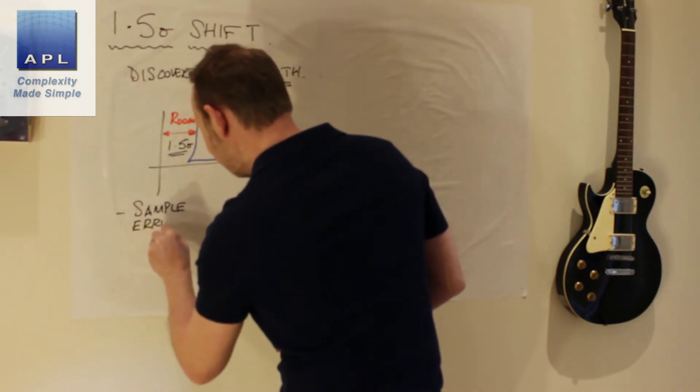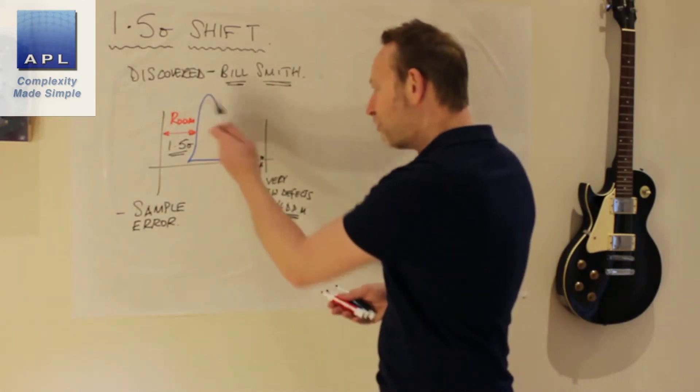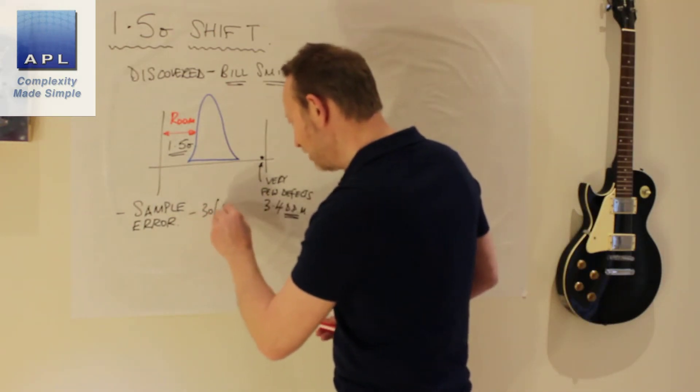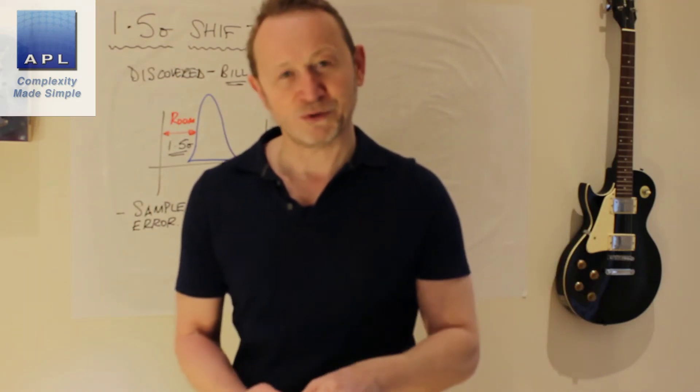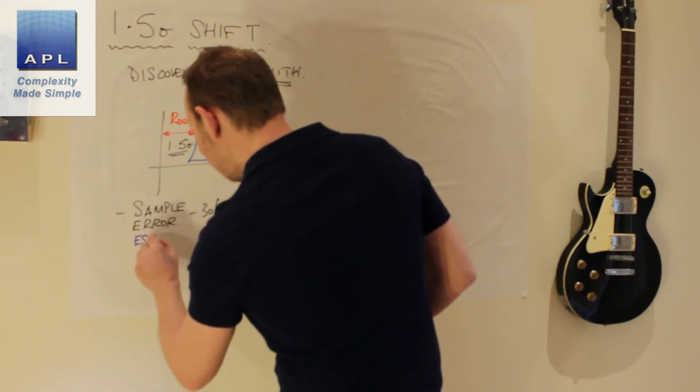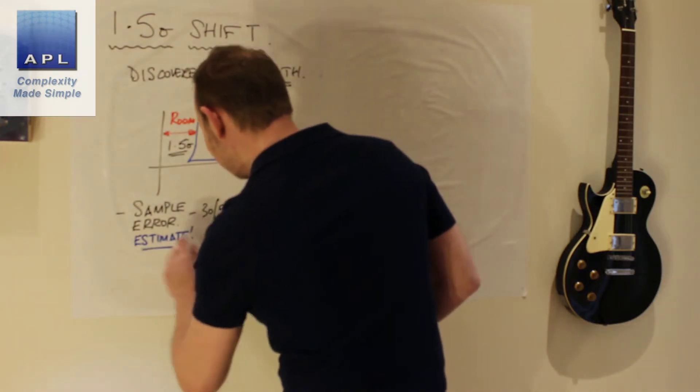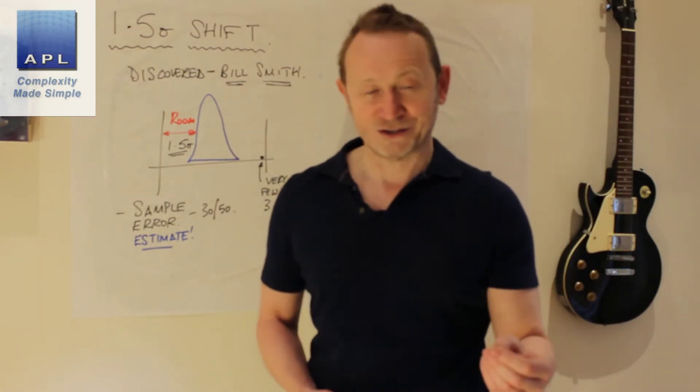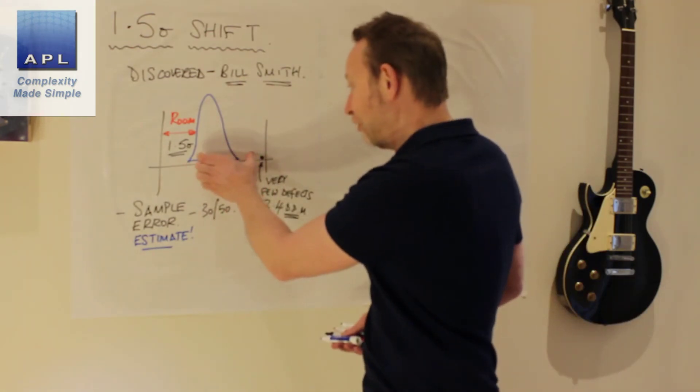Well, let's talk about the practical things that cause the 1.5 Sigma shift. The first one isn't really to do with the process. It's to do with sample error. If you want to know where your process is sitting, you've got to go take a sample. Let's say you take 30 to 50. Of course, when you sample, what do you create? You create an estimate of where your process is sitting. In other words, you can never really know you've put the process dead centre like that. If you took another 30 to 50, you'd get a slightly different result.